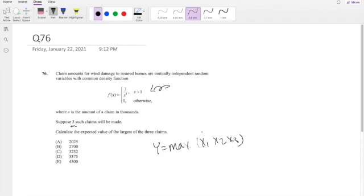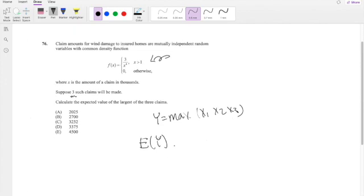Where x1 is the first claim, second claim, and third claim. So basically we're asked to find the expected value of Y. And we know that for expectation, this is equal to y times the probability function of y. So this is what we're looking for.